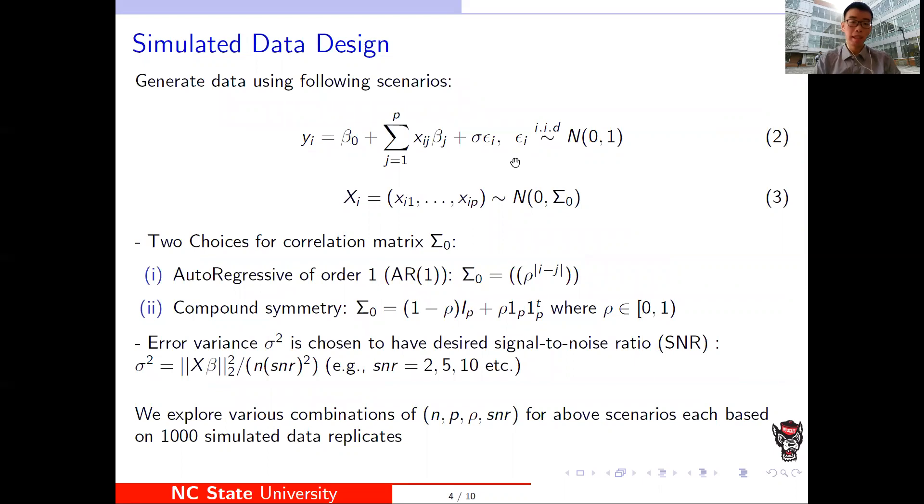We did a simulated data design to compare the different variable selection methods. First we recall the linear regression model. Then we provide two choices for users for the correlation matrix. The first one is called the autoregressive of order one. The second one is called the compound symmetry.